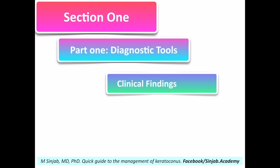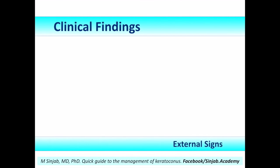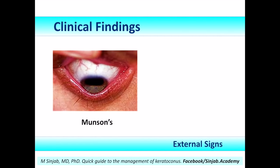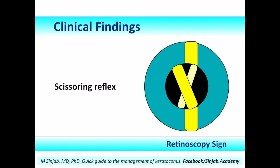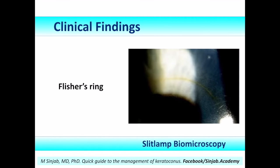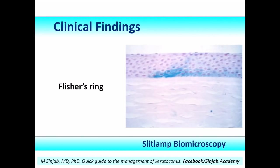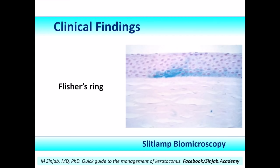Clinical Findings include external signs such as Munson's sign and Rizzotti's sign. The retinoscopic sign is one of the earliest signs that can be detected in early stages of keratoconus, especially on dilated refraction where we can see the scissoring reflex. On slit lamp biomicroscopy, we may see the Fleischer's ring, which is the deposition of iron in the basement layer of the epithelium around the base of the cone.